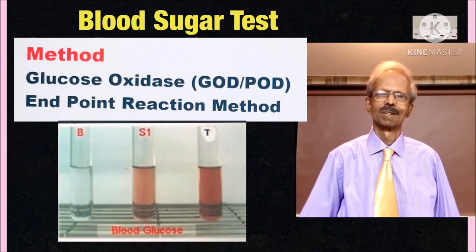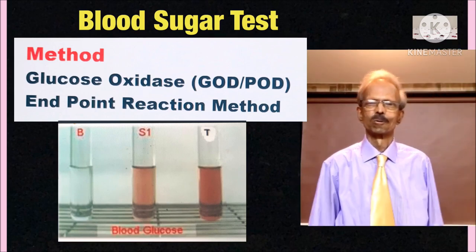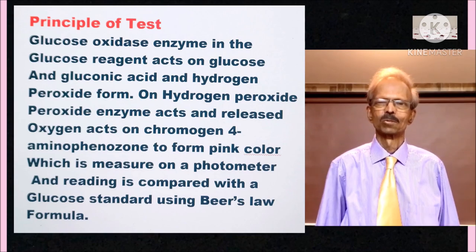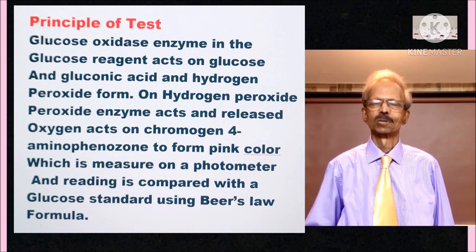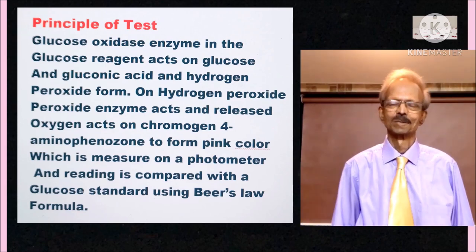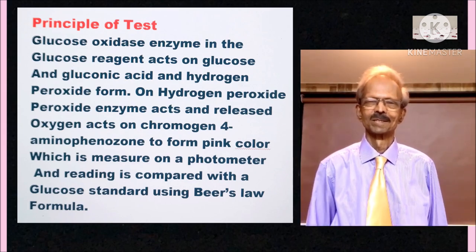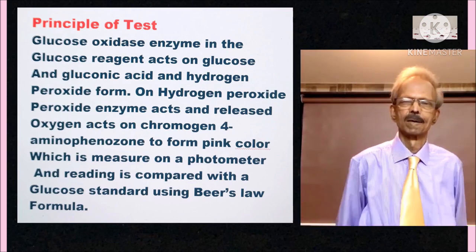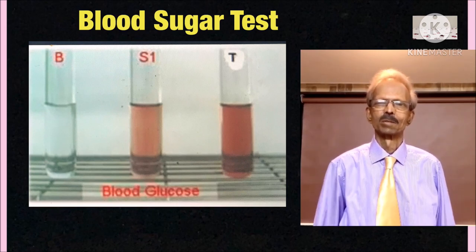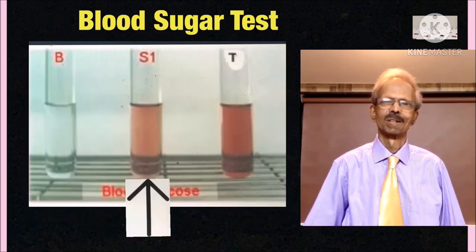Blood glucose test is performed by the glucose oxidase method, and it is an end-point reaction method. The principle: glucose is oxidized by glucose oxidase enzyme and gluconic acid and hydrogen peroxide are formed. Peroxidase enzyme then acts on hydrogen peroxide, and the released oxygen oxidizes the chromogen reagent 4-aminophenazone to form a pink color. This is measured on a photometer and the formed color is compared with a known glucose standard.